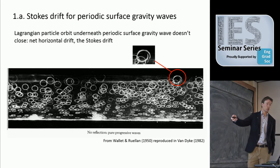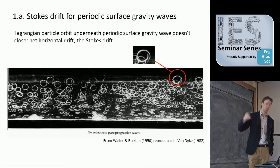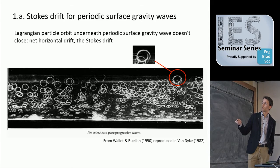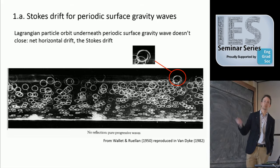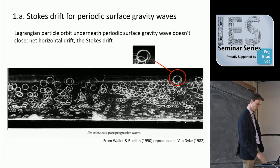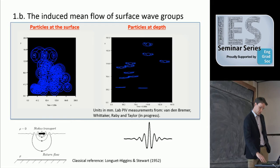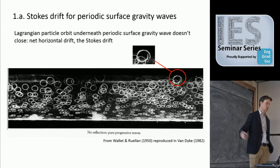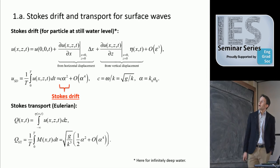If you generate periodic waves in the lab, like the illustration James showed before, and track the Lagrangian orbits underneath by putting in some dye, then these orbits that are traced out are circles in the deep water limit. But if you look very, very closely, it turns out these circles are not quite closed. The fact that these circles don't close — that is Stokes drift, after Stokes, who first described this. It's a little bit hard to observe in the lab because this is a non-linear effect, but you can see there's a small movement as the particle goes through its circular and periodic motion, and it actually ends up a bit towards the right. This is our duck moving, but in a Lagrangian particle sense. This picture is actually taken from van Dijk's Album of Fluid Motion, so in that sense it's a classical problem.